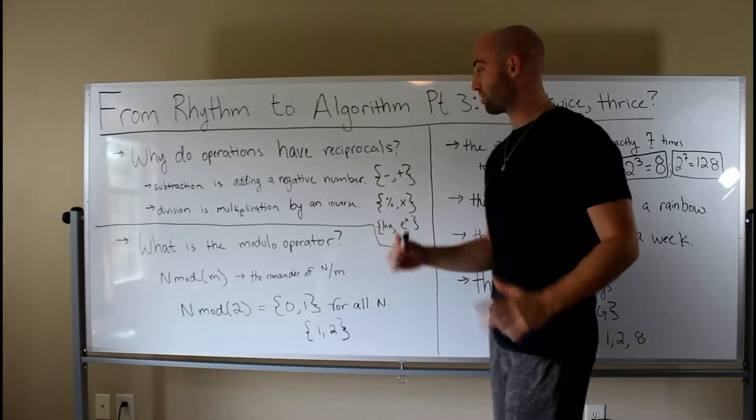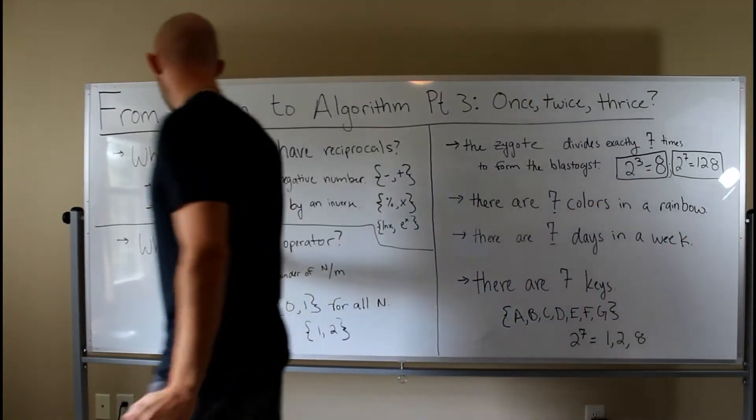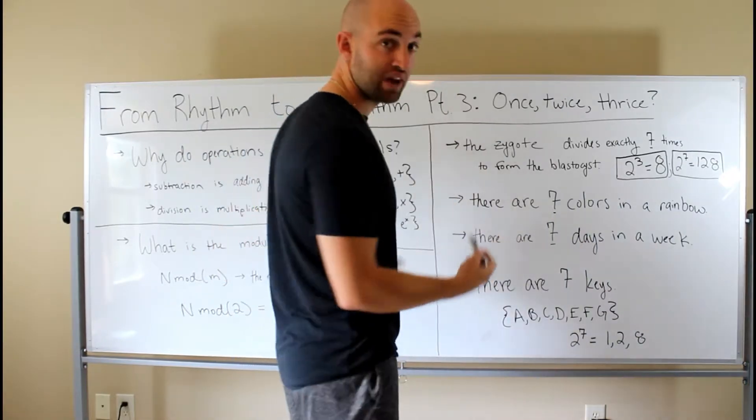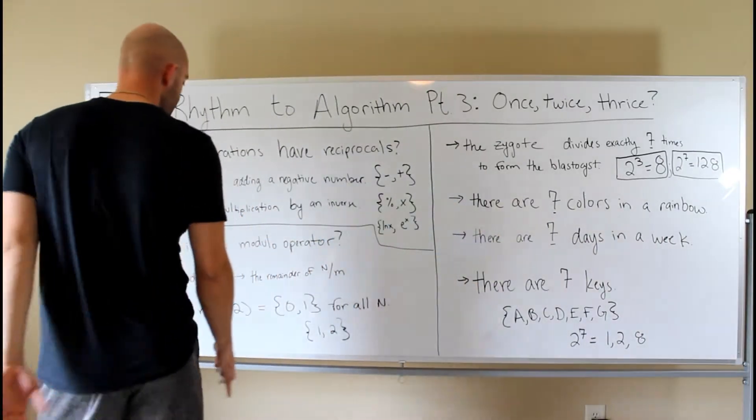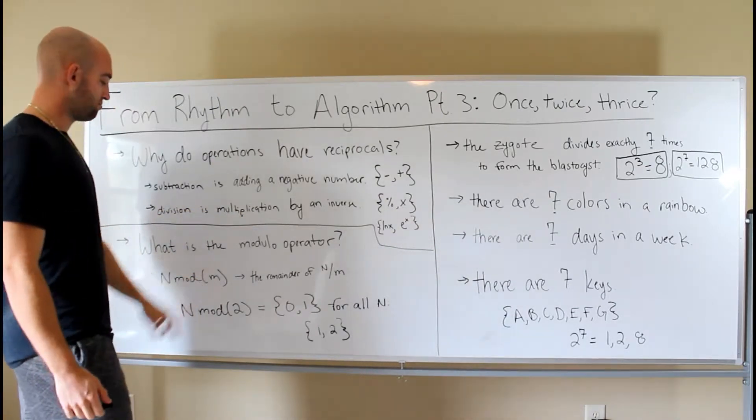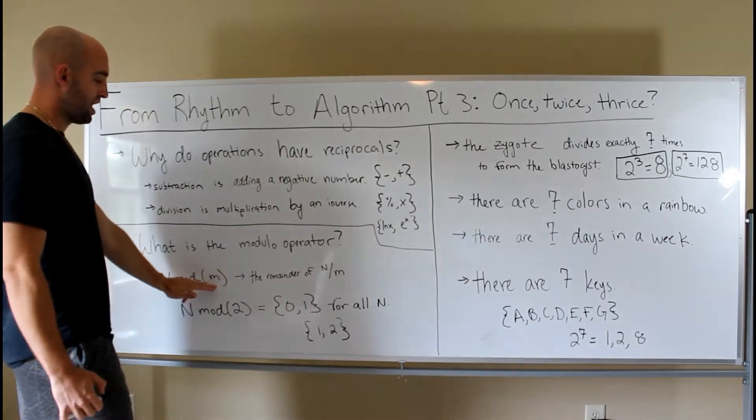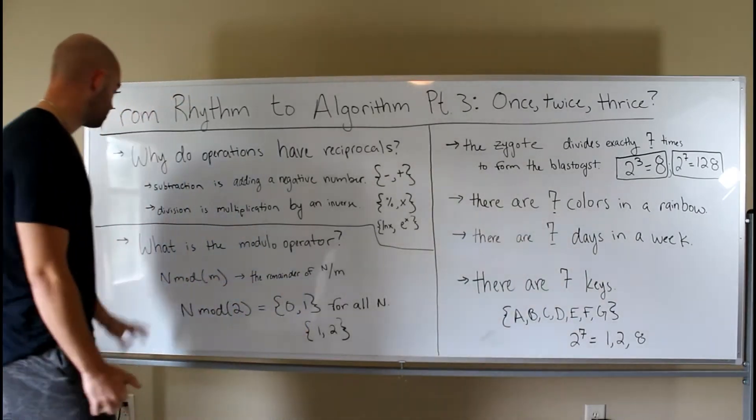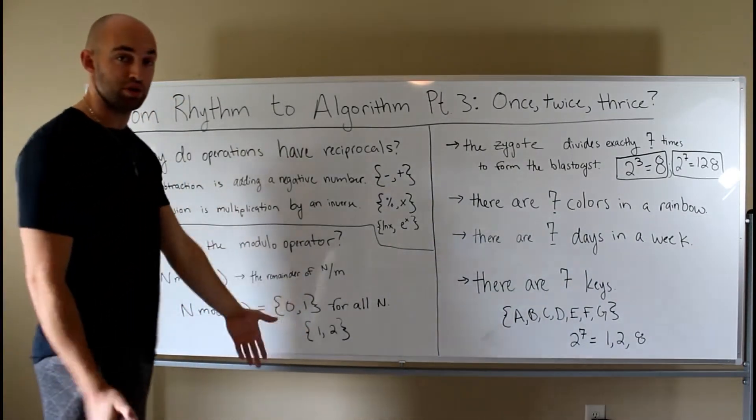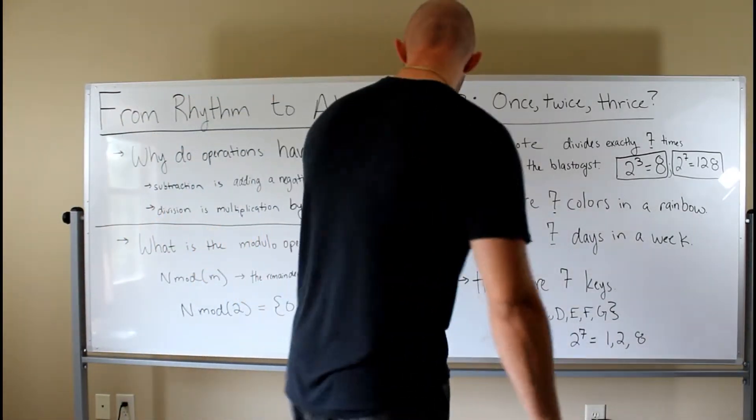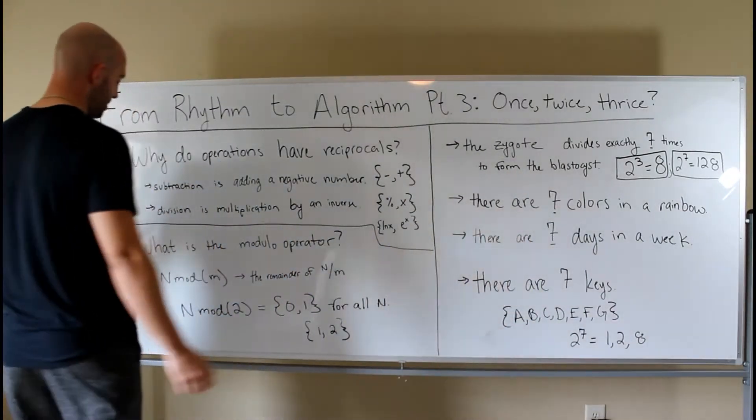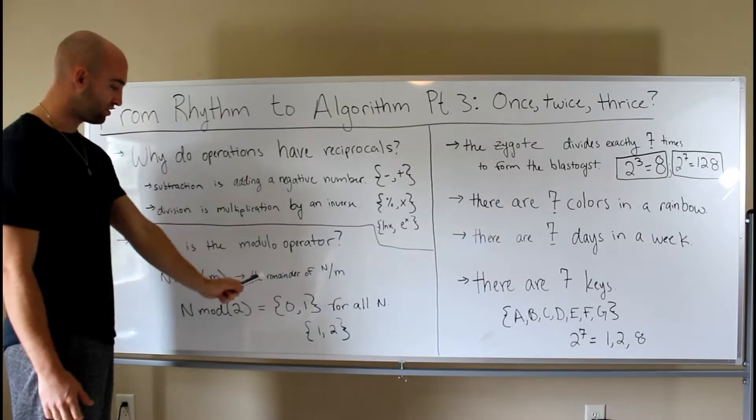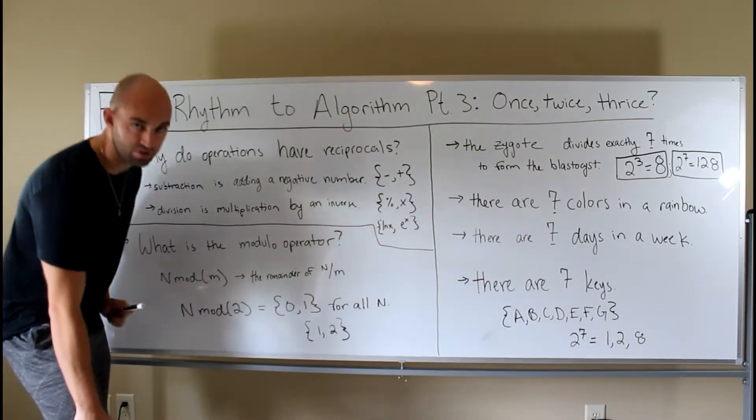And now, getting back to what we said in the first episode, what is the modulo operator? Why should we have a base 10 system? And why should we have a base 2? Well, the modulo operator really says you take n mod m, means you take the number n, you divide it by m, and the remainder of that division is the mod, right? So 2 mod 2 is 0, because 2 divided by 2, there is no remainder, you get 1.